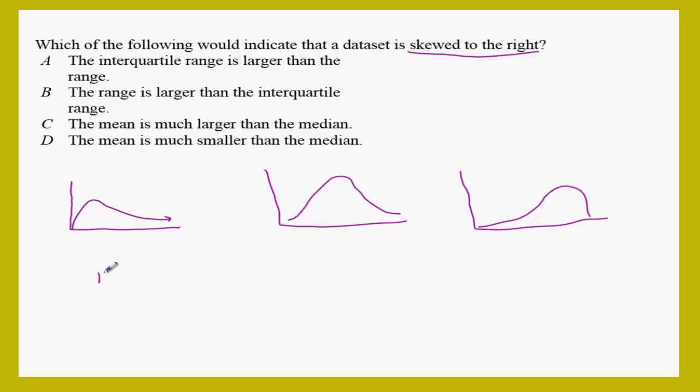This one we call right skewed. This is normal, normal distribution or normal curve or bell curve, bell shape, and this is left skewed.